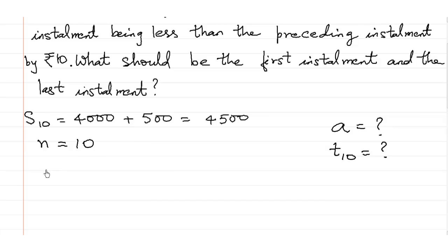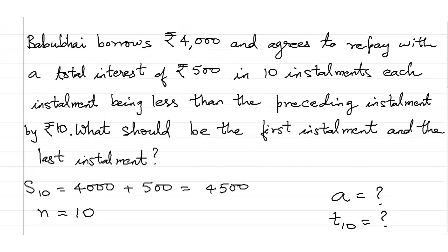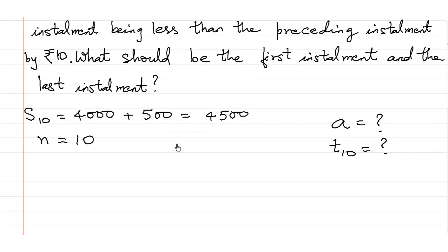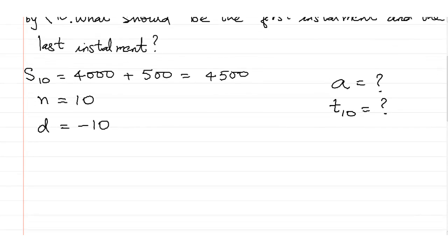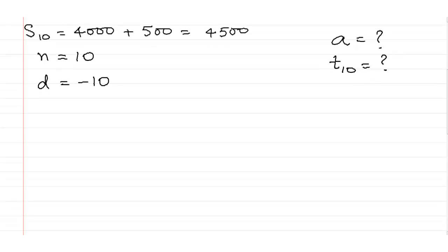What else is given? The common difference is minus 10 because the numbers are decreasing. Each installment being less than the previous installment by Rs. 10. We have also been told that D is equal to minus 10. So let us find what is A and then we will find what is the last number T10.